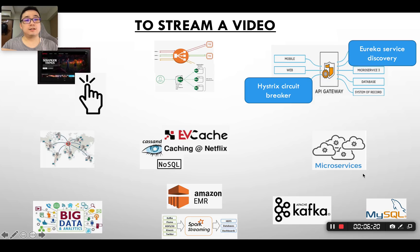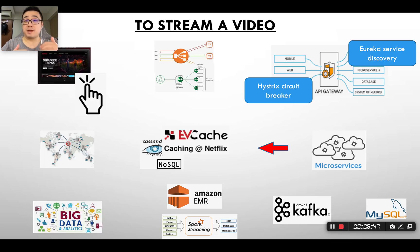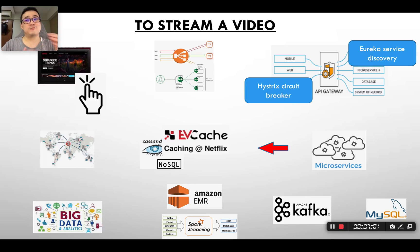The gateway routes the request to one of the microservices, for example the video-playing microservice. It then needs to know where the video is, so it sends a query to a cache. The cache is used to offload queries to the back-end database, for example Cassandra. Netflix adopted EVCache, developed on top of Memcache. The difference between Memcache and Redis is that Memcache is multi-threaded and more performant, but its supported data structures are limited to strings. Redis supports more types, like sets and lists, which is why Redis is used more often in e-commerce and other use cases.